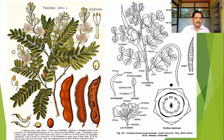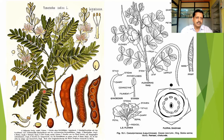This is Tamarindus indica — known as Imli or Chincha. It belongs to family Caesalpiniaceae. Here you can find the branch of Tamarindus indica showing the paripinnate type of leaf. The flowers are in racemose type of inflorescence, with older flowers at the base and younger flowers at the apex.